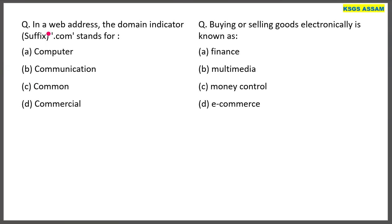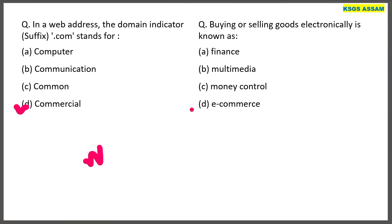The web address domain indicator suffix .com — for example, www.xyz.com. The domain indicator suffix .com stands for commercial. Buying or selling goods electronically is known as e-commerce.